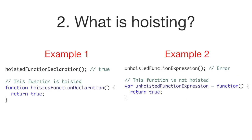Here's an example of function hoisting. Function declarations such as the first example are hoisted, so we can call the function before it is technically defined. But function expressions such as the second example are not hoisted, so we can't call the function before it is defined.